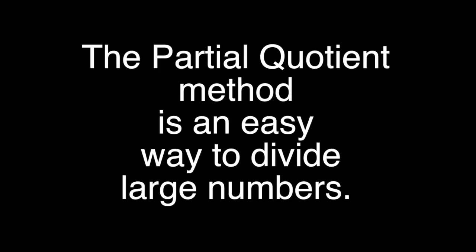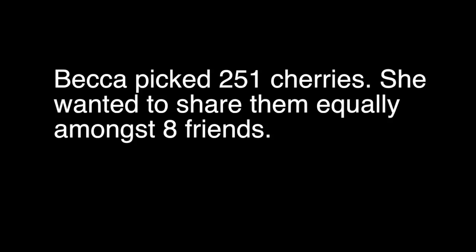The partial quotient method is an easy way to divide large numbers. Let's start with a scenario. Becca picked 251 cherries. She wanted to share them equally amongst eight friends. That's 251 divided by 8. So let's get started.